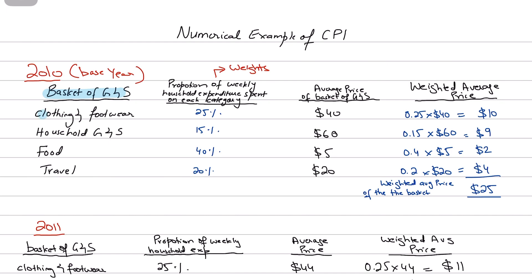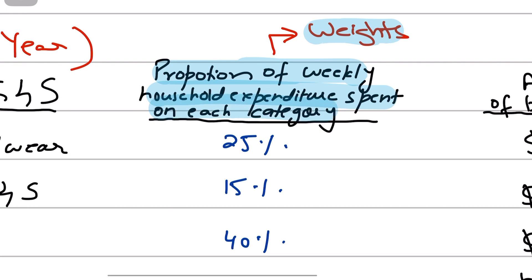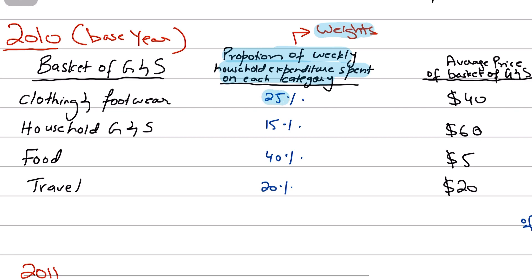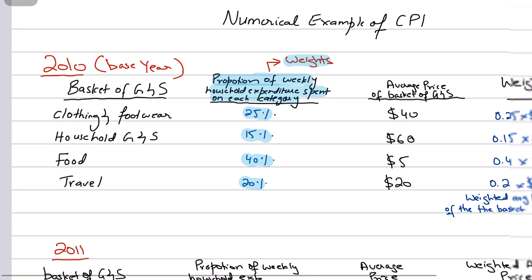What I've done here is set up a basket of goods with items such as clothing and footwear, household goods and services, food, and travel. We've also given weights representing the proportion of weekly household expenditure spent on each category. The basket tells us that 25% of a typical household's expenditure is on clothing and footwear, 15% on household goods and services, 40% on food, and 20% on traveling.